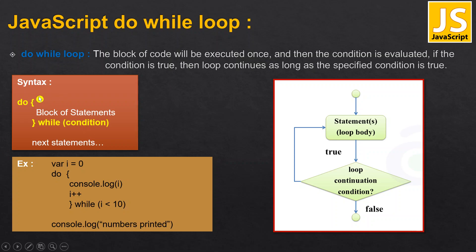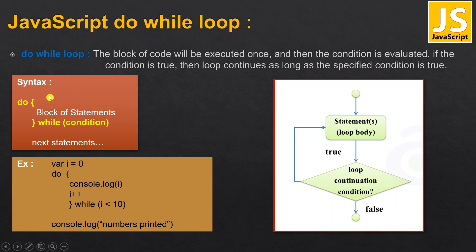In the for and while loop, at the entry itself we check the condition. If the condition is true, then only we permit the control to execute the block of statements. That is why for and while are called entry-controlled loops — at the entrance itself we are controlling the program execution, whether to execute the block of code or not.